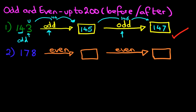First, let's have a look at this number 178. Ignore the first two digits — we're going to concentrate on the units. That is the eight. Now is eight an even number? Well, the even numbers are zero and we count in twos: zero, two, four, six, eight. That's right — eight is an even number, and because eight is an even number, then 178 is also an even number.